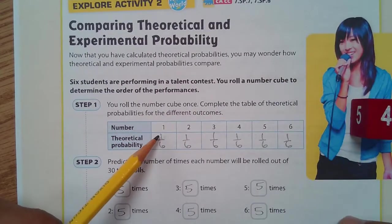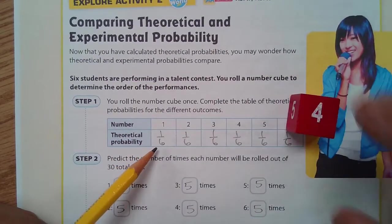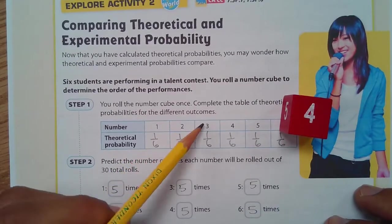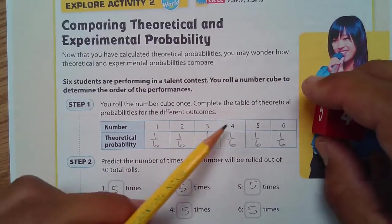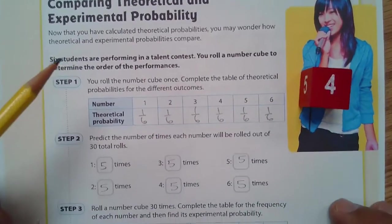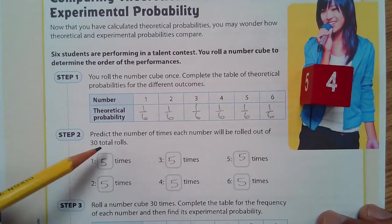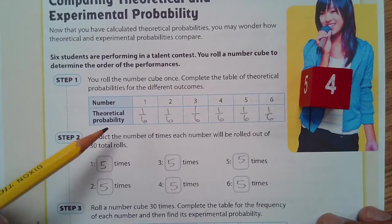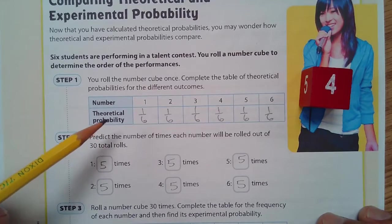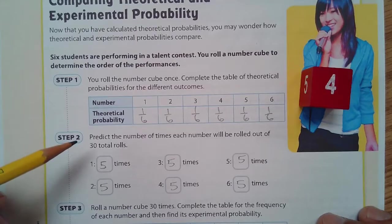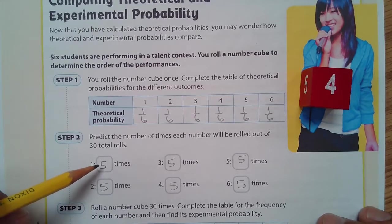Complete the table of theoretical probabilities for the different outcomes. So, there's one 1 out of 6 sides for this number cube. There's a 2, there's a 3, a 4, a 5, and a 6. There's one of each of them out of 6 total sides. 6 different outcomes. Predict the number of rolls. Each number will be rolled out of 30.